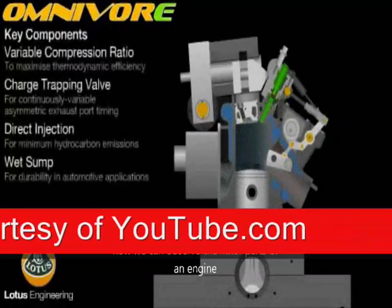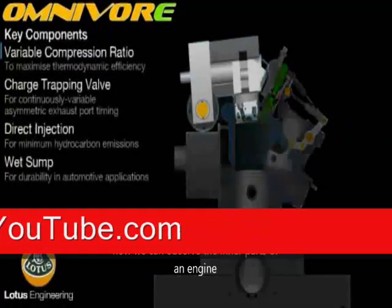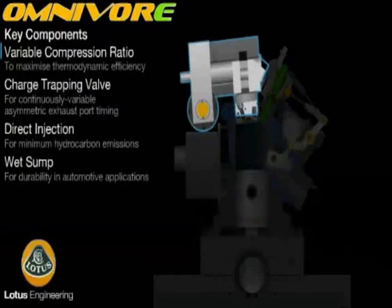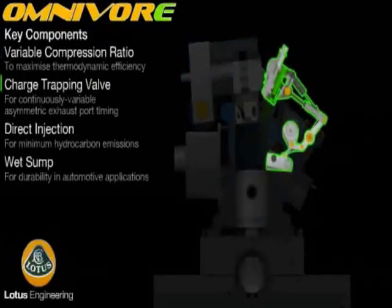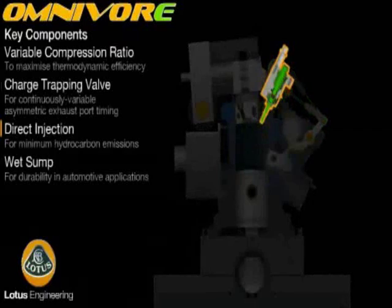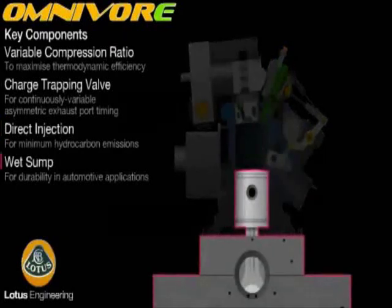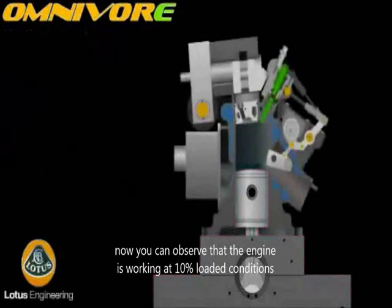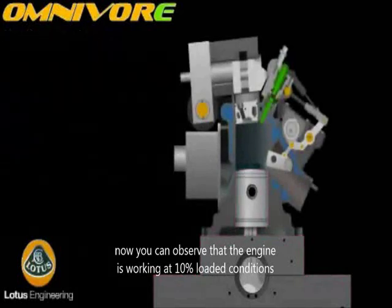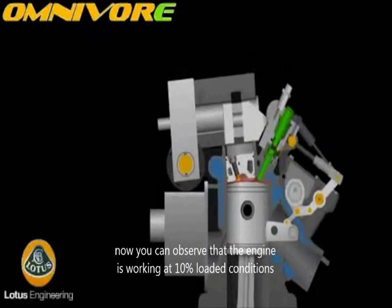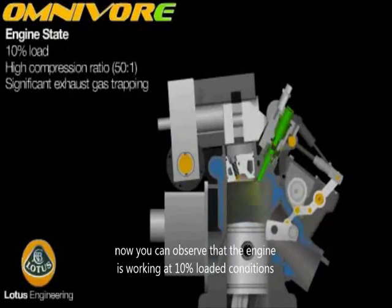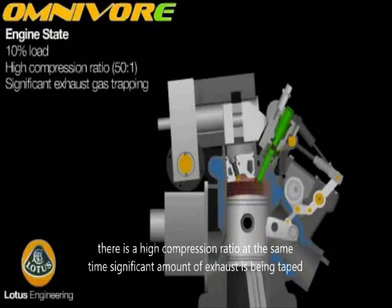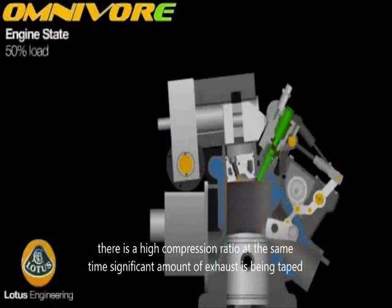The inner parts of the engine can be observed here. This is a variable compression ratio engine with an articulated cylinder head. The charge-trapping wall, a provision for direct injection, and the wet sump are visible. The engine is shown operating at 10% load with a high compression ratio, and there is significant exhaust being trapped.